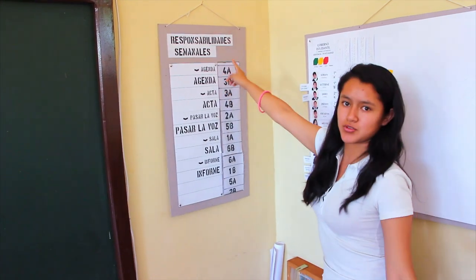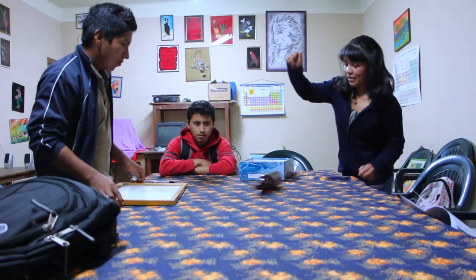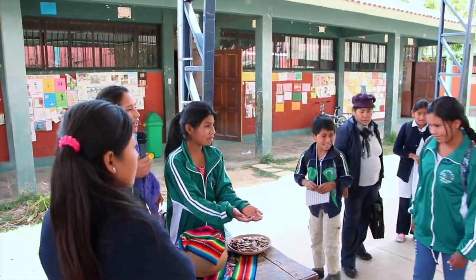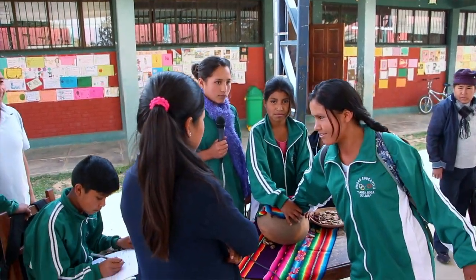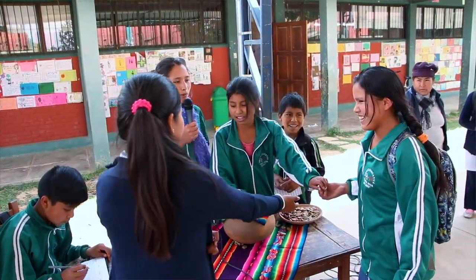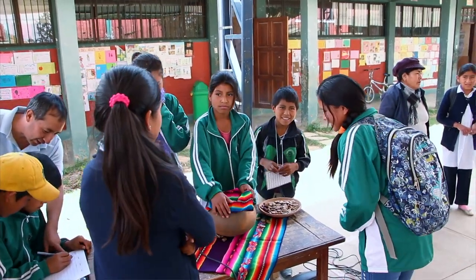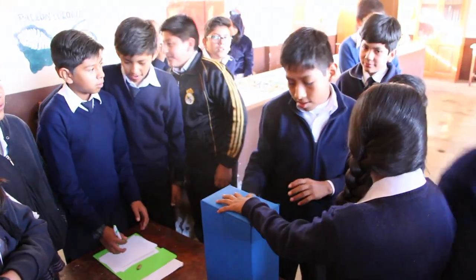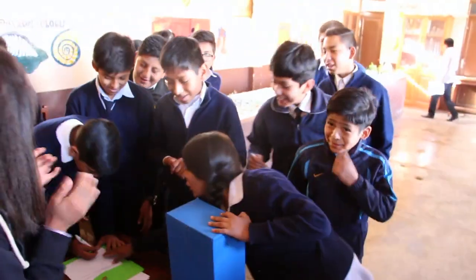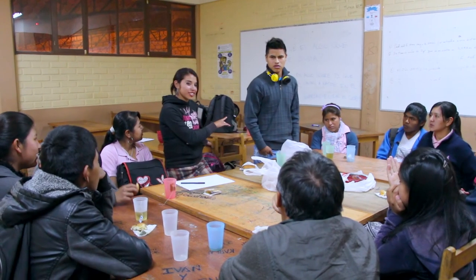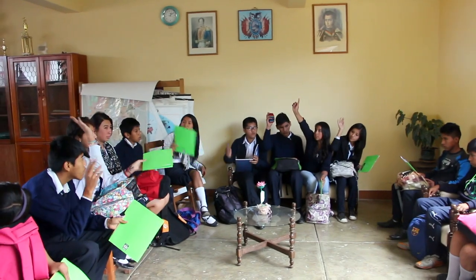So these aren't your typical student governments, and the changes that they've been testing out have shown some real advantages. Random selection makes student governments more inclusive. It opens the door for shyer and less popular students to fully participate, because they no longer have to form a political party, run a campaign, and win an election competing against students who are more charismatic and outgoing. And opening the door to all types of students also makes the student governments themselves more diverse and more representative of the student body as a whole.